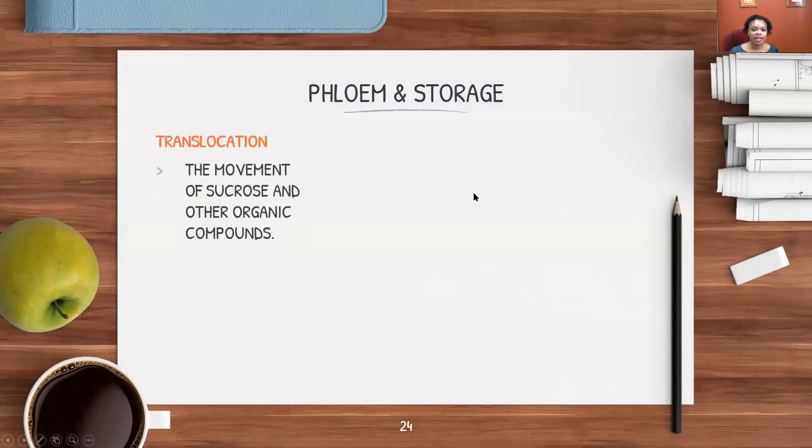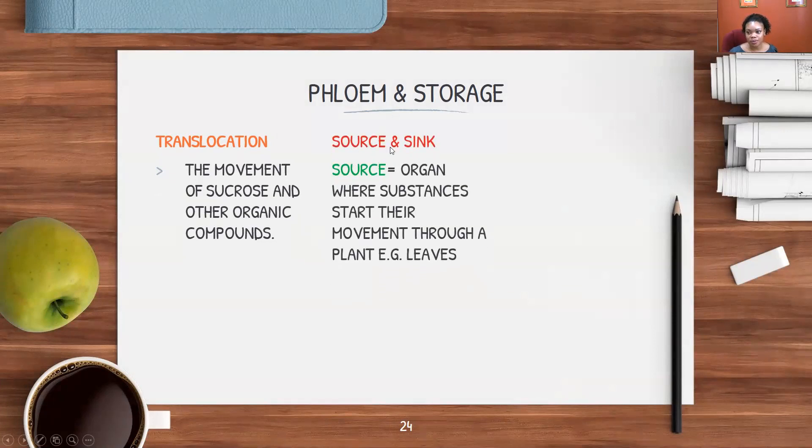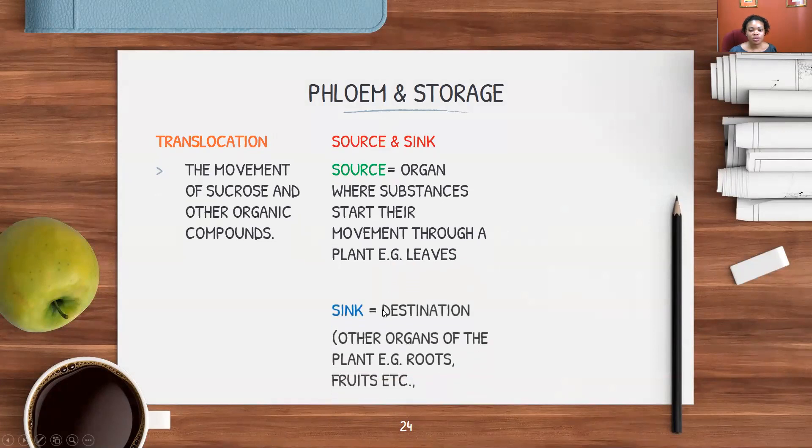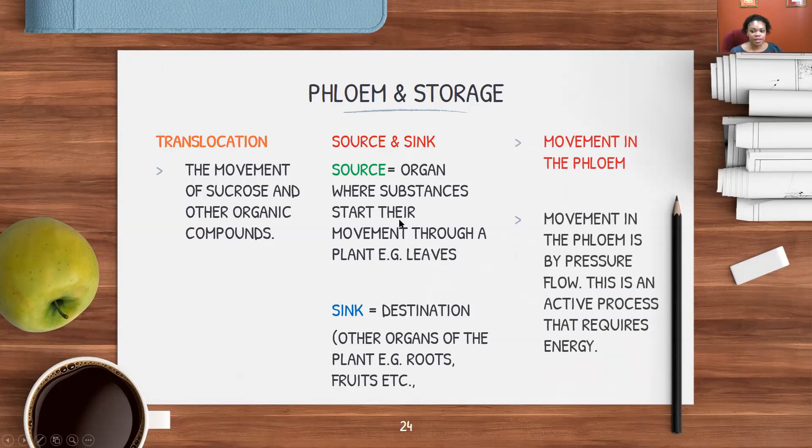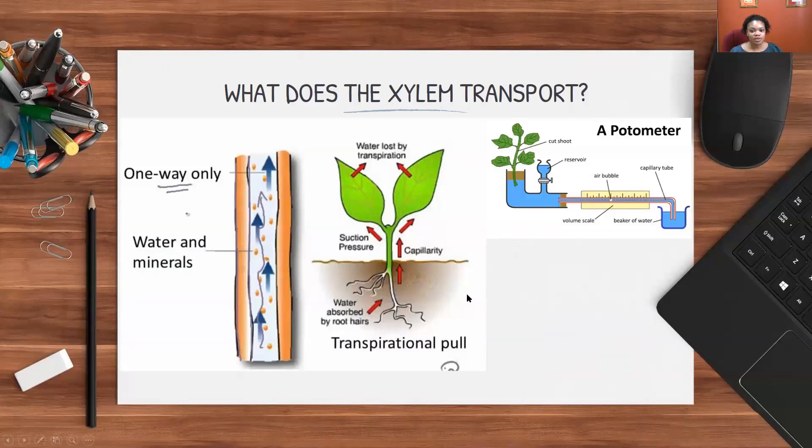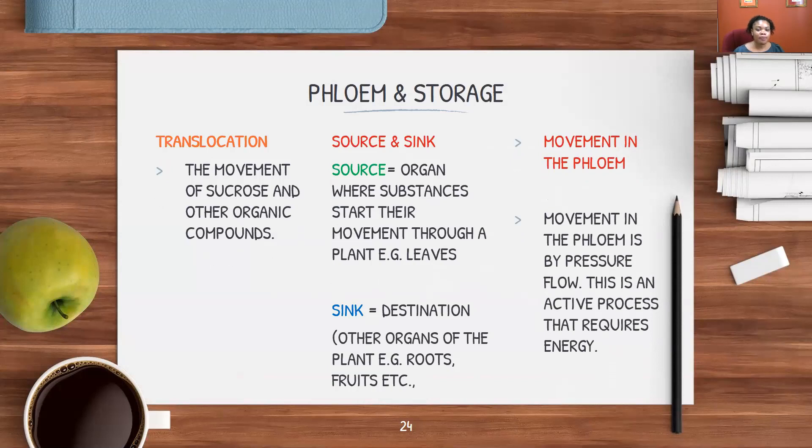Phloem and storage. In terms of translocation, that's what you call the process where the movement of sucrose and other organic compounds is taking place in the phloem. The points you need to remember is what's the difference between a source and a sink. Source is the organ where substances start their movement, for example, leaves. In the leaves, photosynthesis takes place, so that's the source. Then it goes to other organs, for example, the roots, the fruits. That's the destination and therefore the sink. Movement in the phloem is by pressure flow. This is an active process that requires energy. Before with transpiration, this is a passive process that doesn't require any energy. But in the case of translocation or movement in the phloem, it's an active process. The companion cells contain numerous mitochondria that provide the energy for this process to take place.